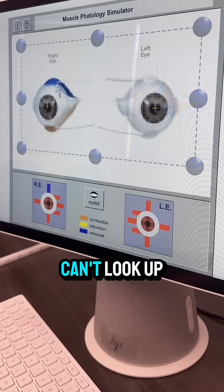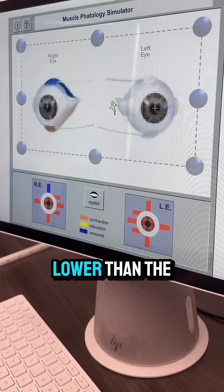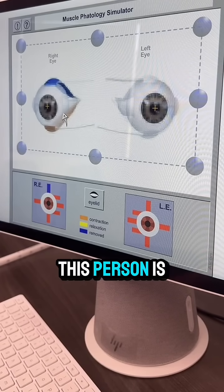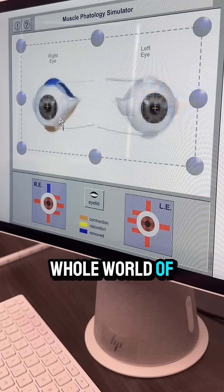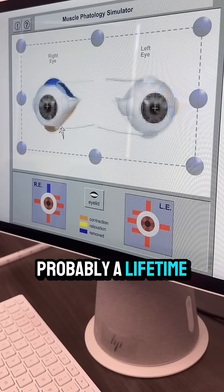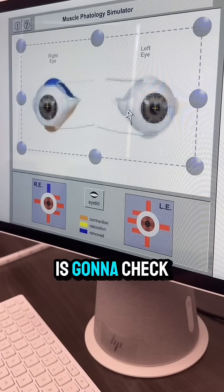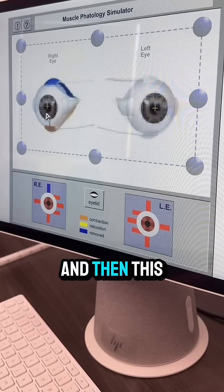This right eye can't look up, so it's looking lower than the left eye. This person is going to have a whole world of symptoms, probably a lifetime, because their doctor is going to check this eye independently and then this eye independently.